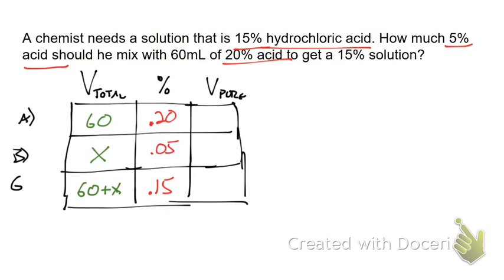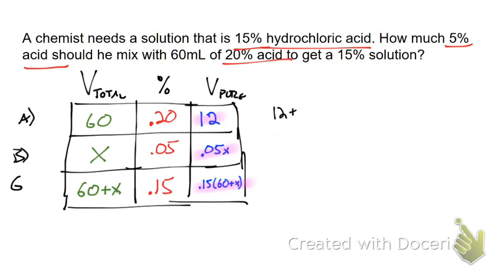For the right column, we multiply total volume by percentage concentration. 60 times 0.20 gives 12 milliliters of pure hydrochloric acid for solution B. For solution A, it's 0.05x. For the goal row, it's 0.15 times (60 + x). We know that 12 plus 0.05x — pure acid from the two solutions mixed — equals 0.15 times (60 + x), the pure acid in the final solution.